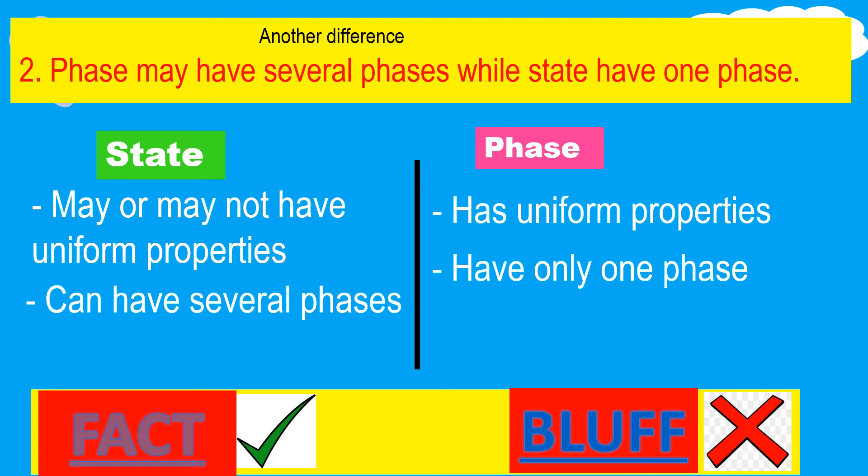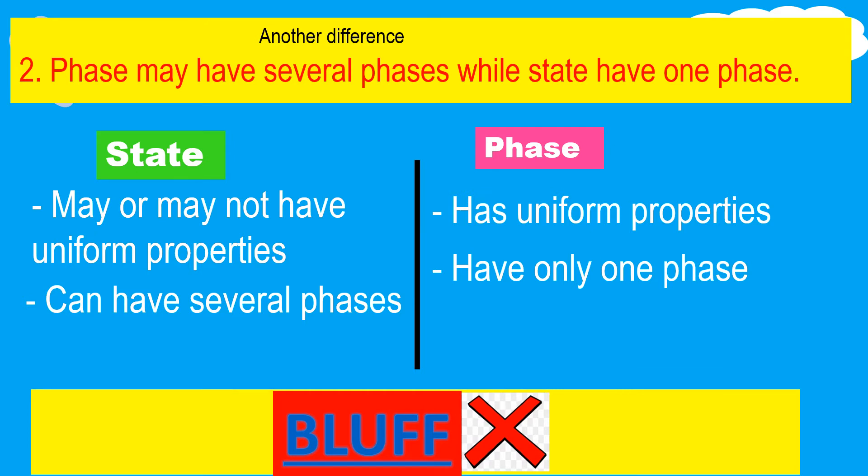Question number two: Phase may have several phases while state have one phase. State may or may not have uniform properties. State can have several phases. Phase has uniform properties. Phase have only one phase. Answer now. Okay, the correct answer is bluff. This is because state may or may not have uniform properties and can have several phases, while phase has uniform properties and have only one phase.